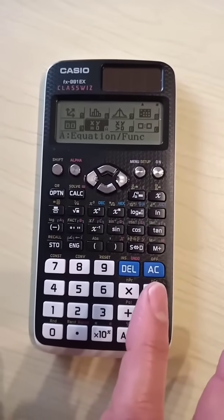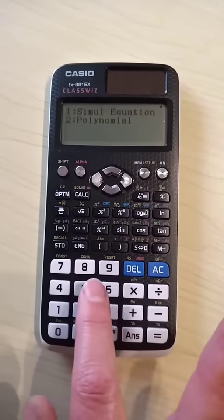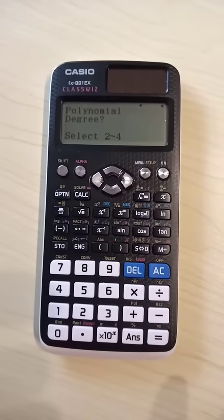The equation slash function mode. Press equals to choose that. Press 2 to choose polynomial mode.